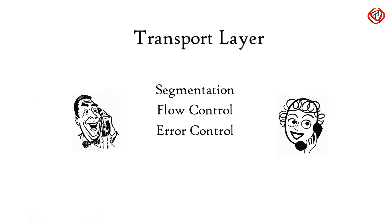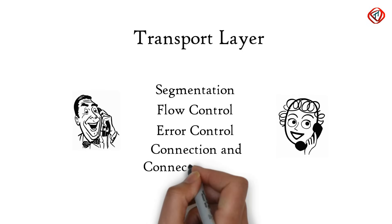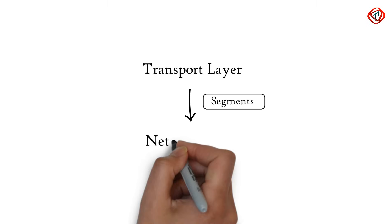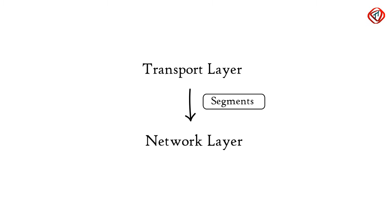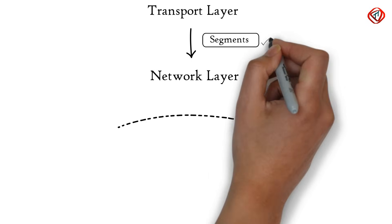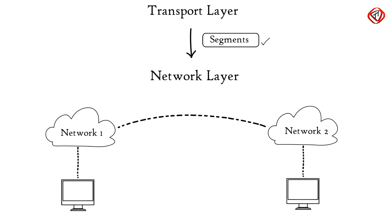So, the transport layer is involved in segmentation, flow control, error control, and connection-oriented and connectionless transmission. The transport layer passes data segments to the network layer. The network layer works for the transmission of received data segments from one computer to another located in different networks. Data units in the network layer are called packets, and it is the layer where routers reside.